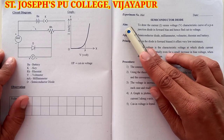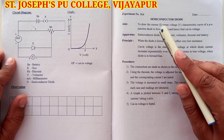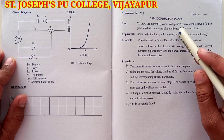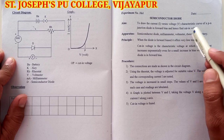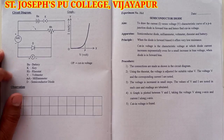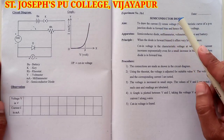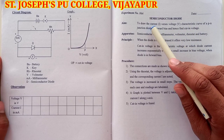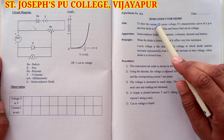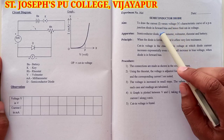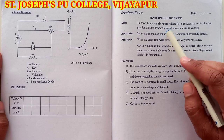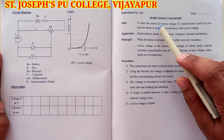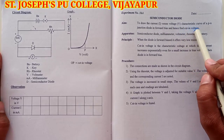First of all, the aim of the experiment. The aim is to draw the current versus voltage characteristic curve of a p-n junction diode in forward bias and hence find the cut-in voltage. So in this experiment, we are going to find the cut-in voltage in a p-n junction diode, particularly a semiconductor diode. By plotting the graph of current versus voltage — the IV characteristics — we have to find the cut-in voltage.